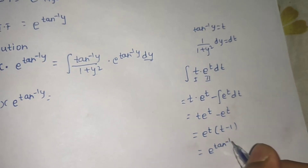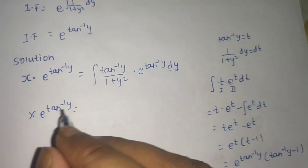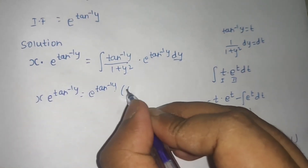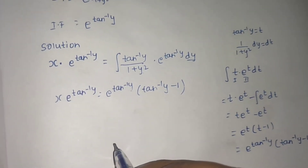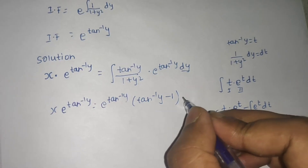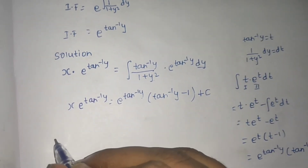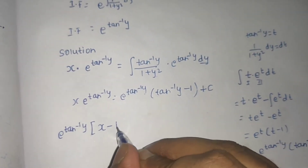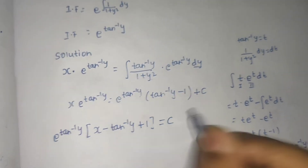So I can write this as eᵗ(t − 1), and since t = tan⁻¹y, the result is e^(tan⁻¹y)·(tan⁻¹y − 1). Now writing the full solution: x·e^(tan⁻¹y) equals e^(tan⁻¹y)·(tan⁻¹y − 1) plus constant C. Taking all terms to the LHS with e^(tan⁻¹y) as common factor: e^(tan⁻¹y)·(x − tan⁻¹y + 1) = C. This is the final answer.